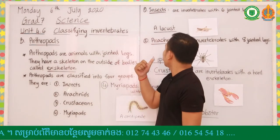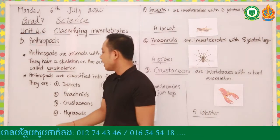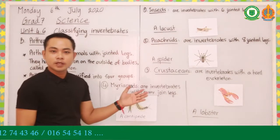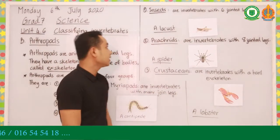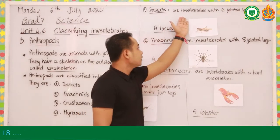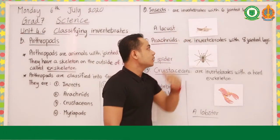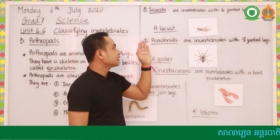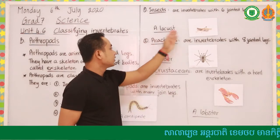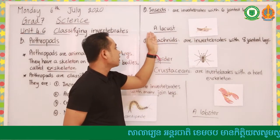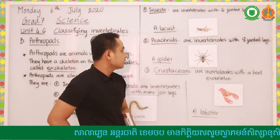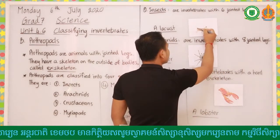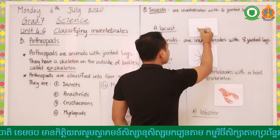The first group we are going to study is insects. We know that there are many insects. Insects are invertebrates with six jointed legs. Let's pick one example - as you can see in the picture right here, it is a locust. A locust has six jointed legs with the body.